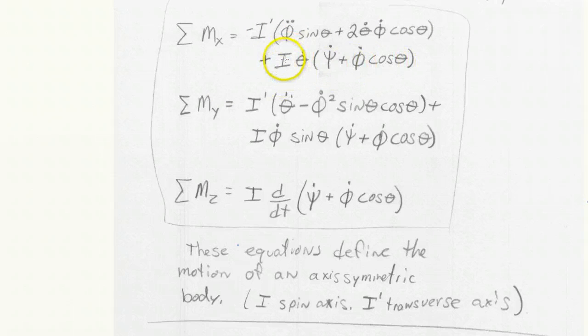the moment of inertia I, and that's the moment of inertia about the spin axis, but also the moment of inertia I prime about the transverse axis. So that's perpendicular to the spin axis. And so these equations define the motion of an axisymmetric body.